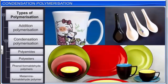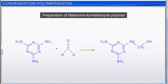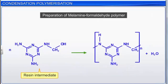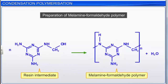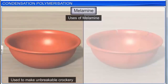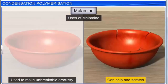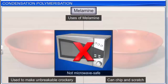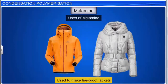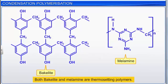Another important condensation polymer is the melamine formaldehyde polymer. The first step is the reaction between melamine and formaldehyde, which results in the formation of a resin intermediate. The resin intermediate undergoes condensation polymerization to form melamine. Melamine is used to make unbreakable crockery — it can chip and scratch, however, and is not microwave safe. Melamine is also used to make fireproof jackets. Note that both Bakelite and melamine are thermosetting polymers.